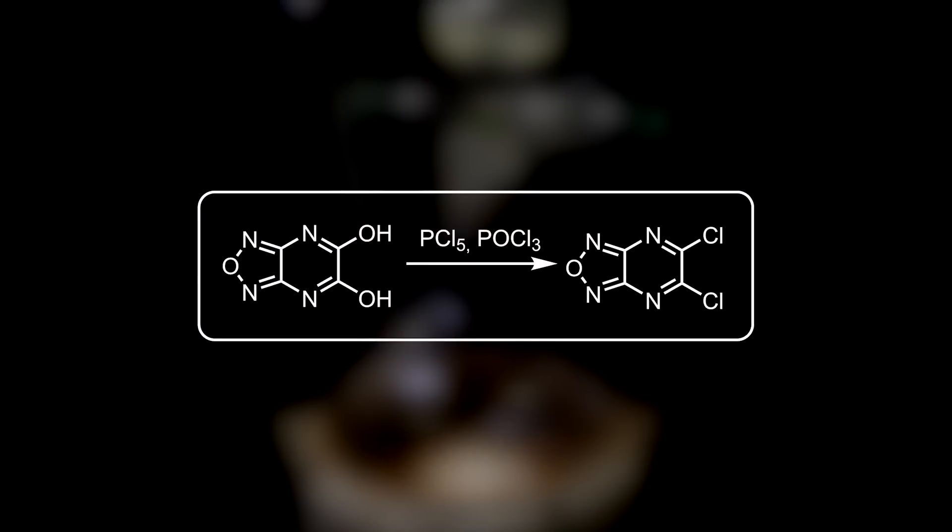In this reaction, the hydroxyl groups are replaced with chlorines by reacting with phosphorus oxychloride and phosphorus pentachloride. How exactly this mixture functions mechanistically, I could not find online, so I will leave it as is.